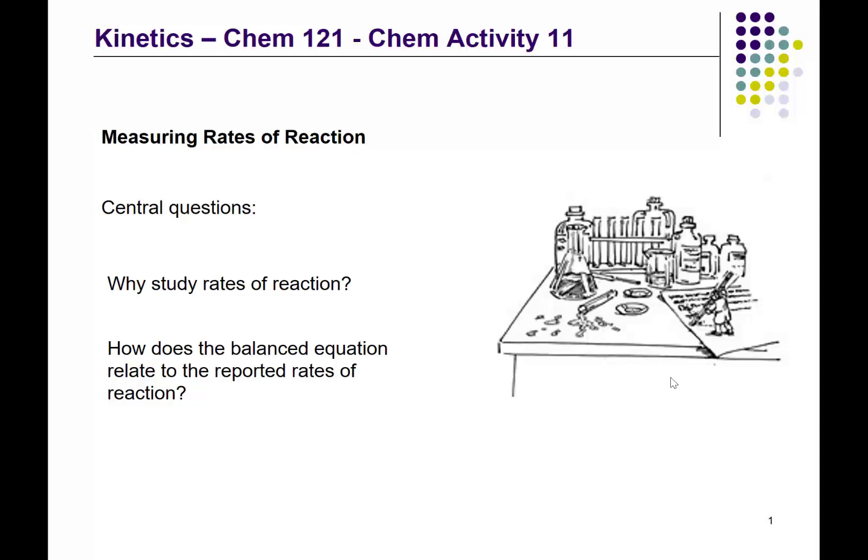In terms of why we study rates of reaction, if we were industrial chemists, we may want to be optimizing a certain industrial process. We may want to speed up the rate at which a certain chemical is produced, or perhaps slow it down, or maximize the yield in a particular amount of time. Another reason why we would study rates of reaction is it gives us an indirect sense of what's going on at the molecular level, which we'll address later in this unit.